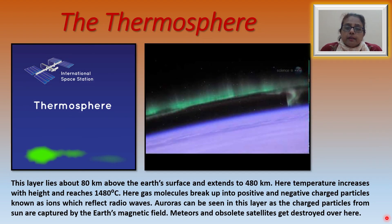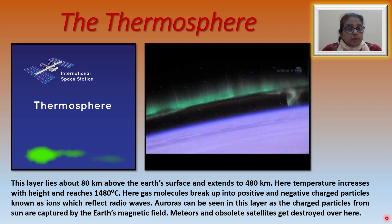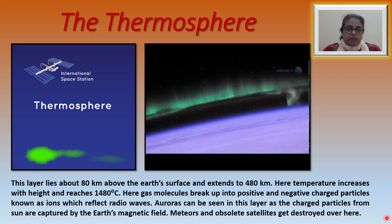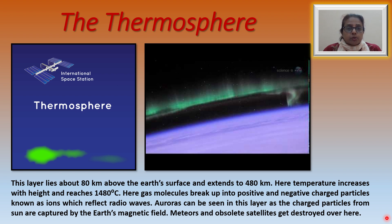The thermosphere lies about 80 kilometers above the Earth's surface and extends for about 480 kilometers. Here, temperature increases with height and can reach nearly 1,480 degrees centigrade. The gas molecules break up into positively and negatively charged particles known as ions, which help in reflecting radio waves. Auroras can be seen in this layer, formed due to charged particles from the Sun being captured by the Earth's magnetic field. Meteors and obsolete satellites also get destroyed here.